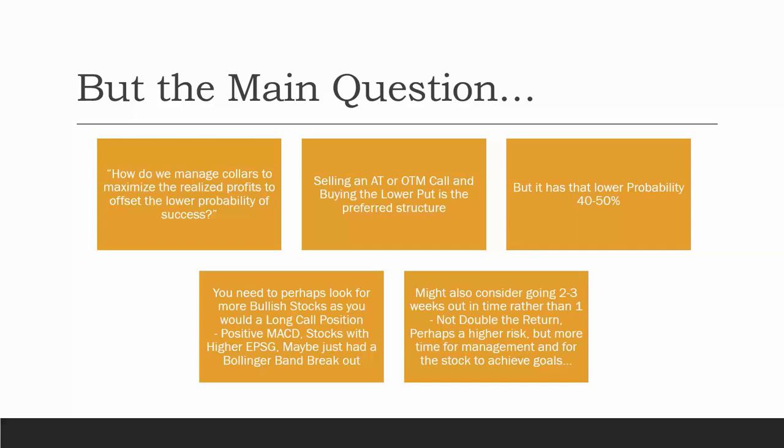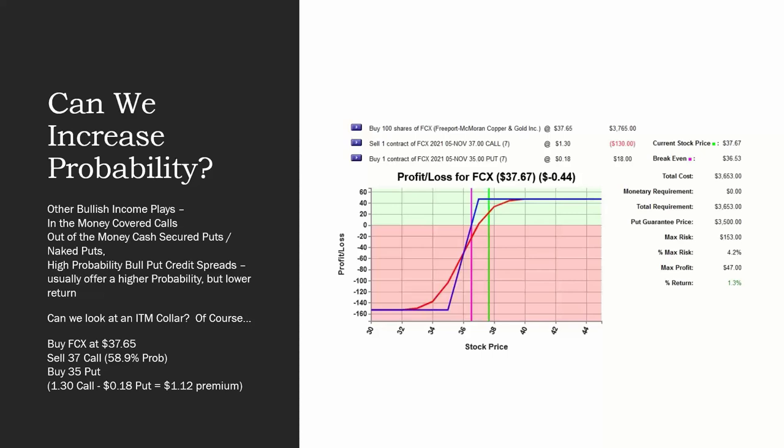You might also want to consider looking a little further out in time. Look two to three weeks out in time. You're not going to have double the return, and you might have a higher risk, but you have more time for management and more time for the stock if there's a day, a Tuesday or Wednesday where the market suddenly pulls back. If I'm still eight days to expiration, ten days to expiration, I might see a recovery rather than the remaining two days or three days I need by just selling week by week. It might give you more time for management and for the stock to achieve its goals of what you're looking to accomplish. Can we increase the probability? Other bullish income plays, we talk about in-the-money covered calls, out-of-the-money cash-secured puts or naked puts, and high-probability bull put credit spreads can give us a higher probability but with a lower return. That's really for what I'm referring to, the covered call and the cash-secured naked put.